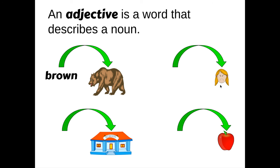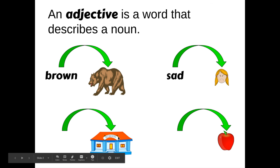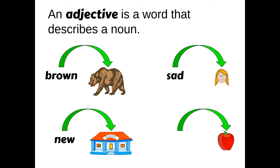If you were describing this girl, you might say she's little or she's sad. If you were describing this school, it might be a new school or an exciting school. And if you're describing this apple, you might say it's a red apple, a juicy apple, a delicious apple, or a shiny apple. You might even say how many apples — that you have five apples. Those are all adjectives.